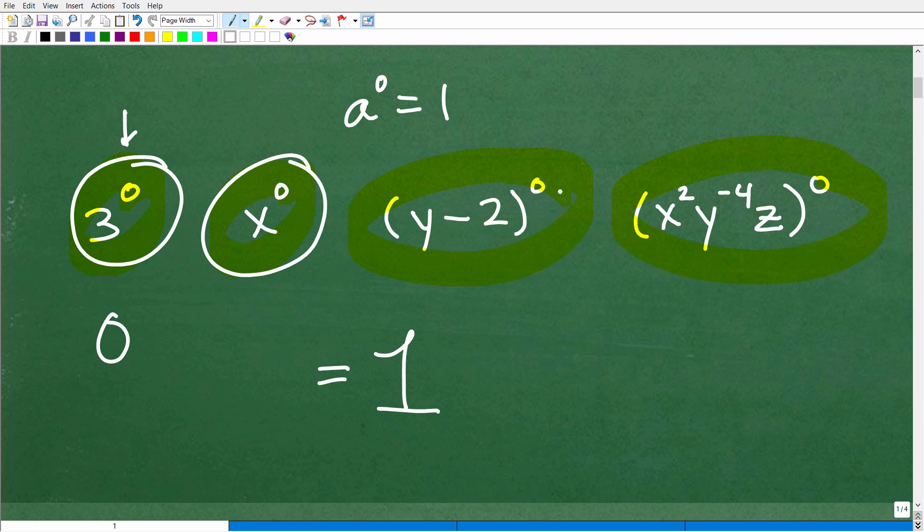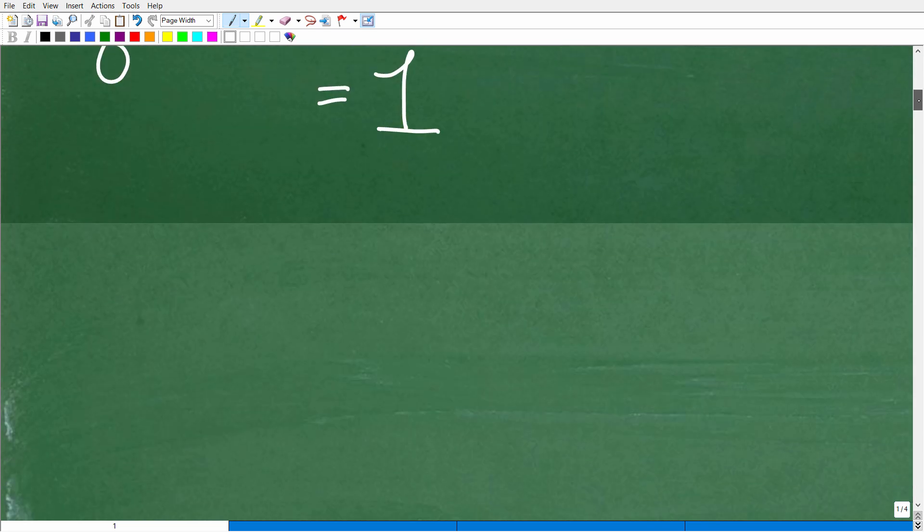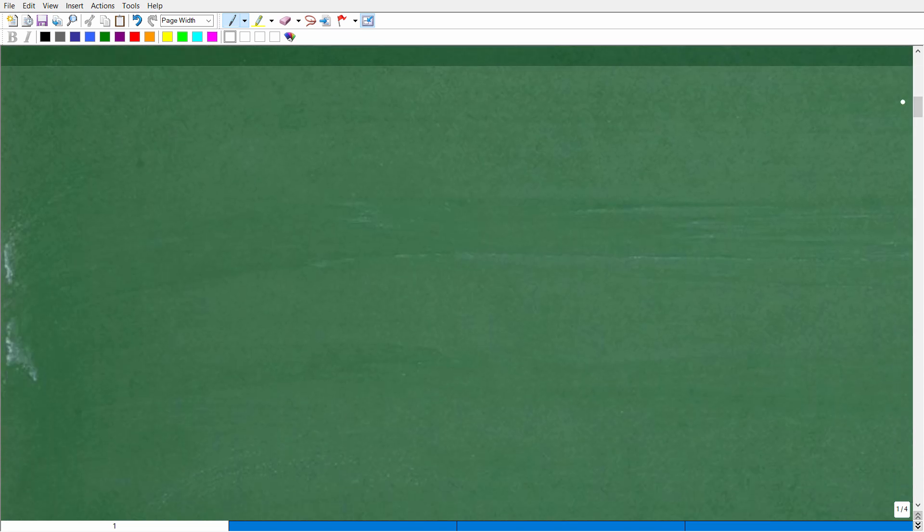Okay, so it doesn't make a difference if it's a variable or some sort of other expression. If you have a base, and it's whatever that base might be, and you're taking that to the 0 power, the answer is going to be 1. So let me go ahead and just write down here the other things that you need to know.